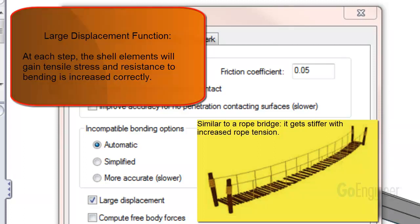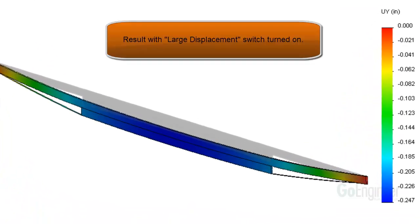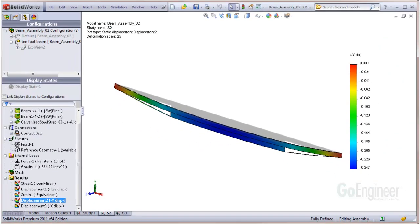The analysis will take longer, but you will get the correct answer. Here is a plot of the resultant displacement of the system scaled up to visualize the deformation. The maximum displacement is about a quarter of an inch. The steel strap increases the system stiffness and reduces the deflection by about 40%.